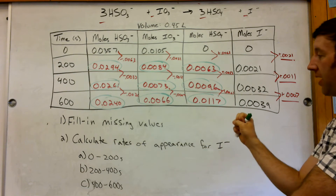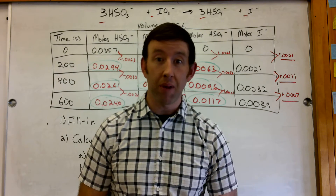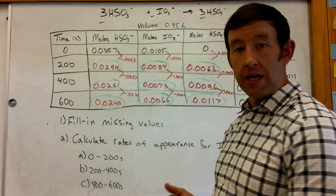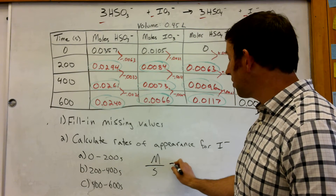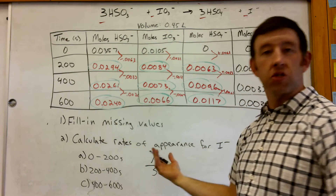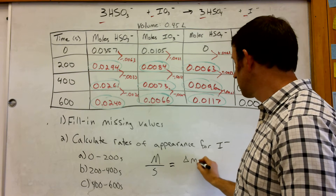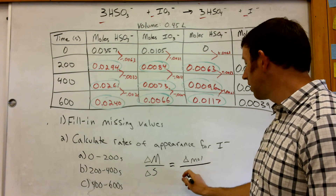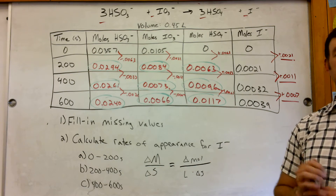The way we calculate the rate of appearance is: it's the change in concentration divided by the change in time. We usually measure concentration of solutions in molarity — capital M. So the rate is molarity divided by seconds. More precisely, it's the change in moles over liters times the change in seconds. All we're going to do now is plug in some values.